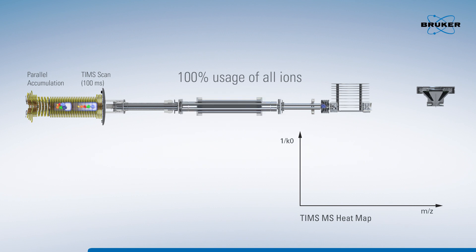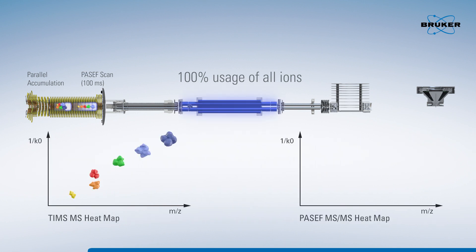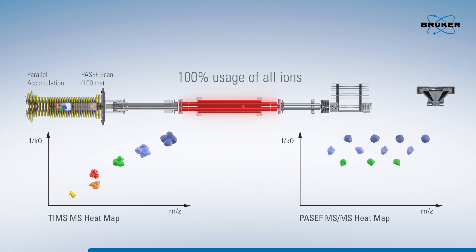The TIMSTOF Pro uses a dual TIMS device to accumulate ions and separate them according to their mobility. The ions are released from the TIMS region by ramping down the voltage in 100 milliseconds. The mobility peaks are just a few milliseconds in width, yielding a revolutionary increase in speed and sensitivity. The next batch of ions is simultaneously accumulated in the first TIMS region, resulting in a nearly 100% duty cycle.